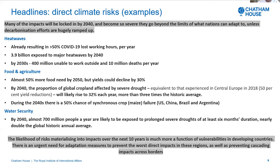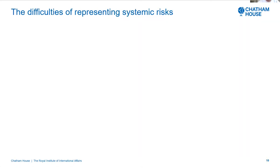The important point to highlight is that the likelihood of risks materialising into impacts over the next 10 years is much more a function of the vulnerabilities in developing countries. Therefore, there is an urgent need for adaptation measures to prevent the worst direct impacts in these regions, as well as preventing cascading impacts across borders.